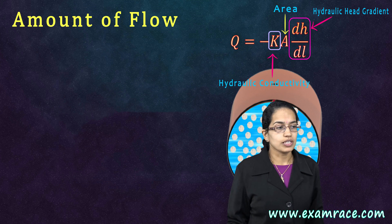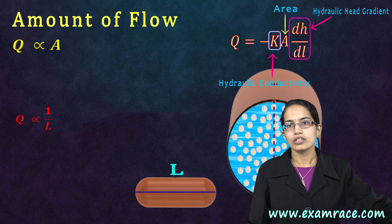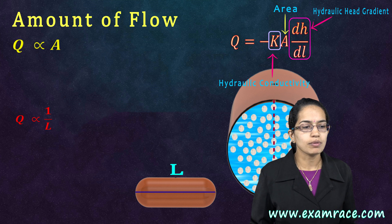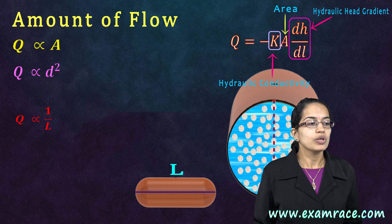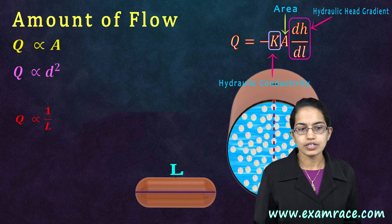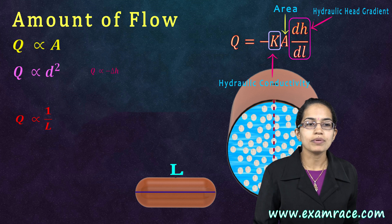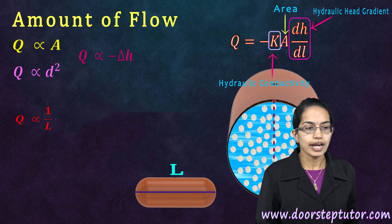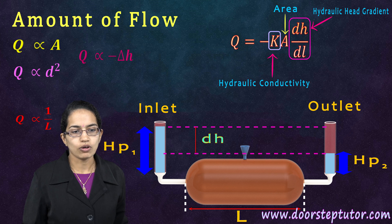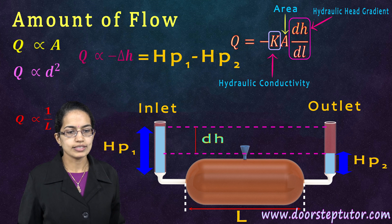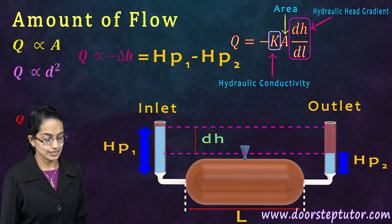The amount of flow is directly proportional to the area through which it is flowing, but inversely proportional to the length of the column. It is directly proportional to the square of the diameter (or square of the radius), and directly proportional to the difference in the head gradient — H1 minus H2 — between inlet and outlet. This difference in head gradient has a direct relation with the amount of flow.